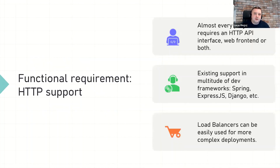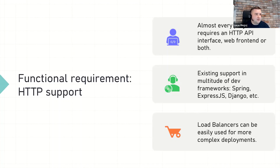Almost every project that I participate in has the same functional requirement. It needs to support HTTP protocol to either expose some kind of API, provide a web interface, or both. There is a wide range of solutions that allows us to fill that requirement. Most of them are tightly connected to existing programming frameworks. For example, Spring can expose HTTP in Java applications, Express.js in Node applications, Django in Python, and so on.